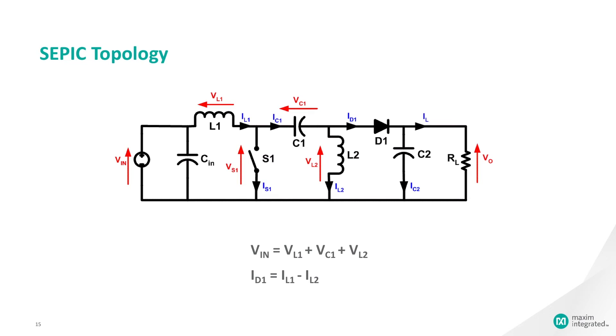Also, since the voltages are the same in magnitude, the ripple currents from the two inductors will be equal in magnitude. The average currents can be summed as follows. Average capacitor currents must be zero. So you end up with ID1 is equal to IL1 minus IL2.